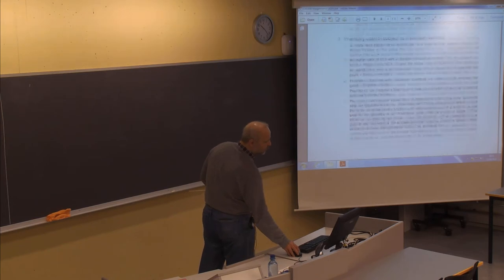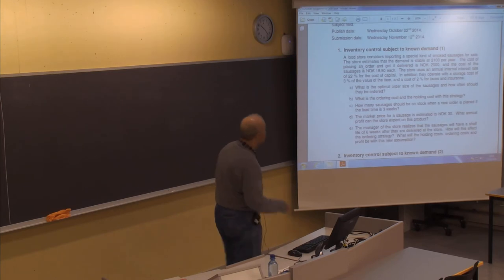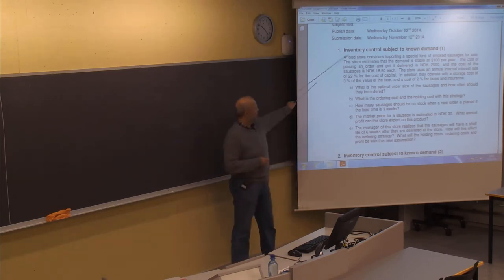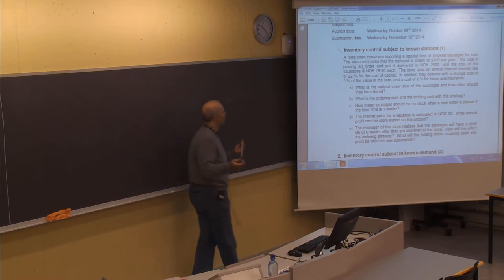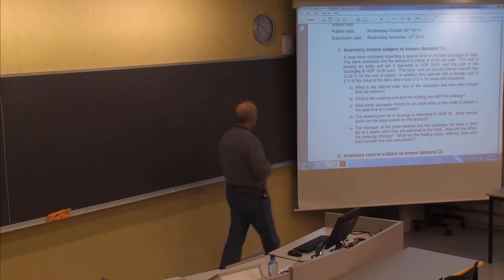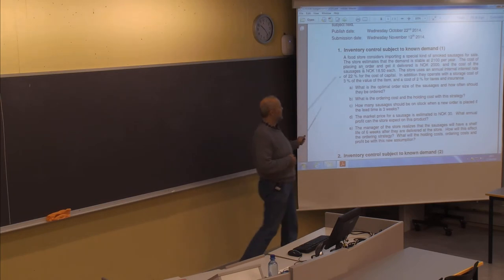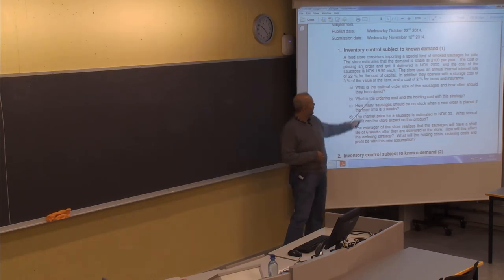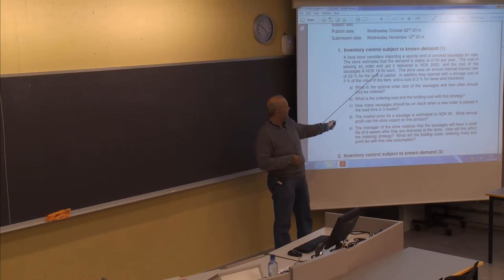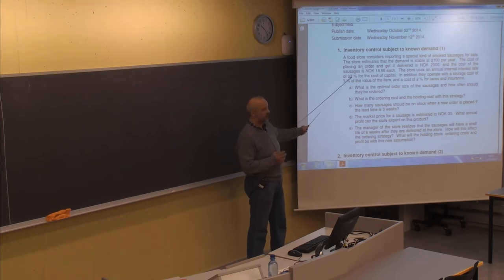The two first problems you should be able to solve, at least after this lecture. The first one is about inventory control with known demand when you are buying inventory from another vendor. You have a store which is importing some kind of smoked sausages, and they estimate a stable demand of 2,100 per year. The cost of placing an order is given.